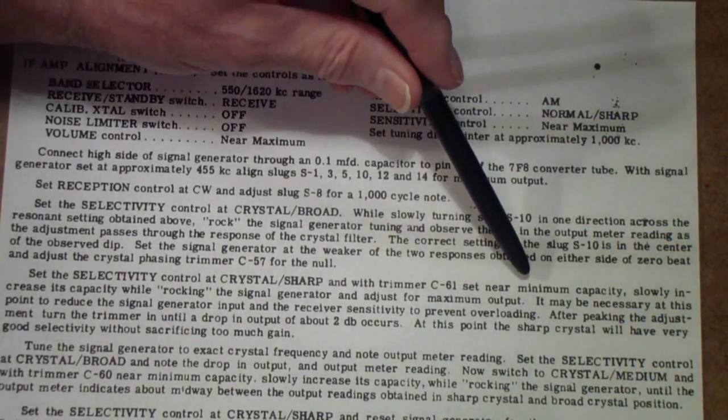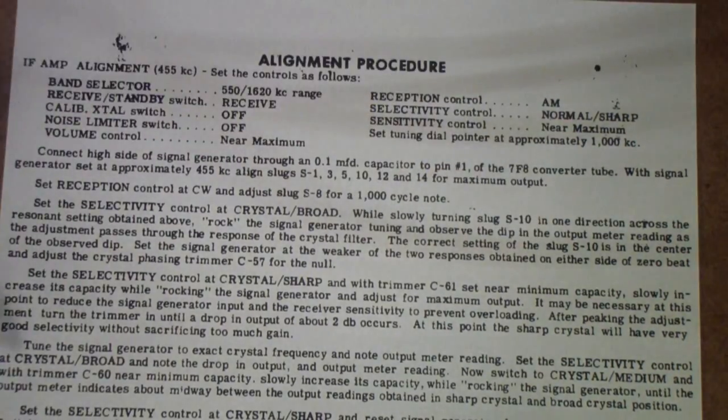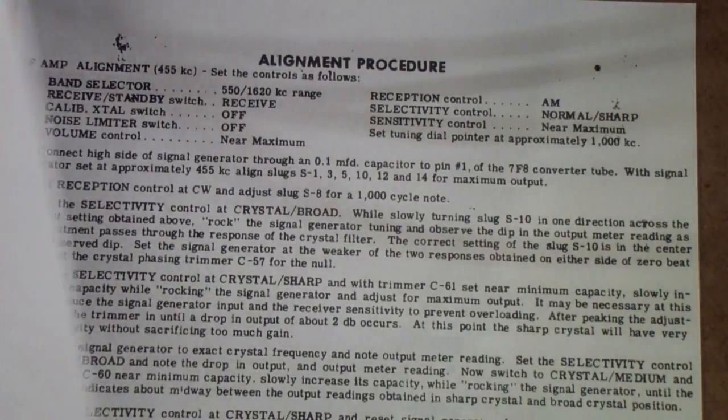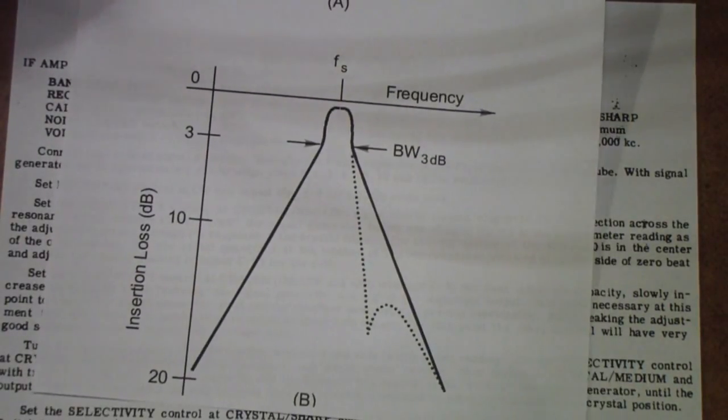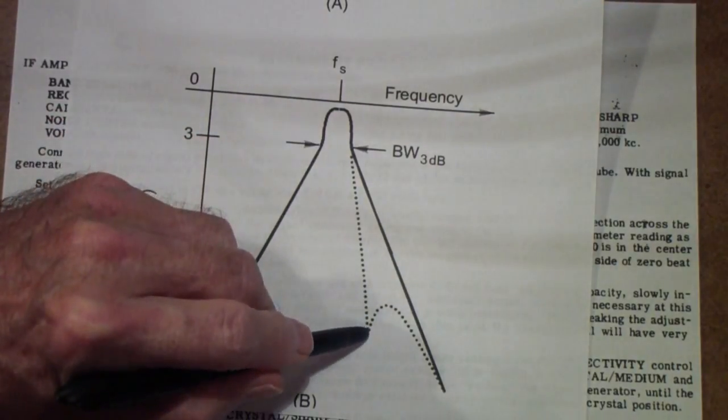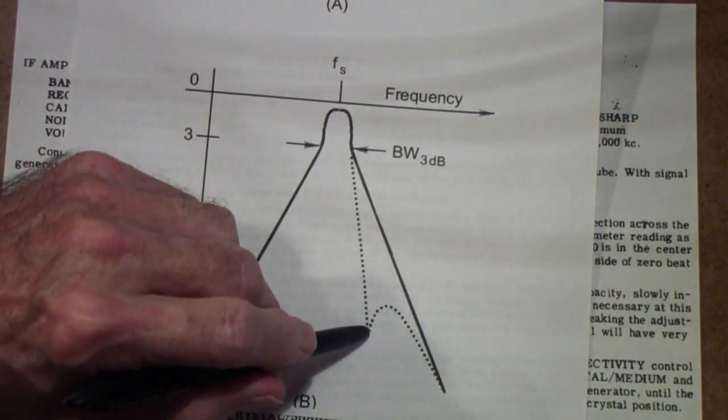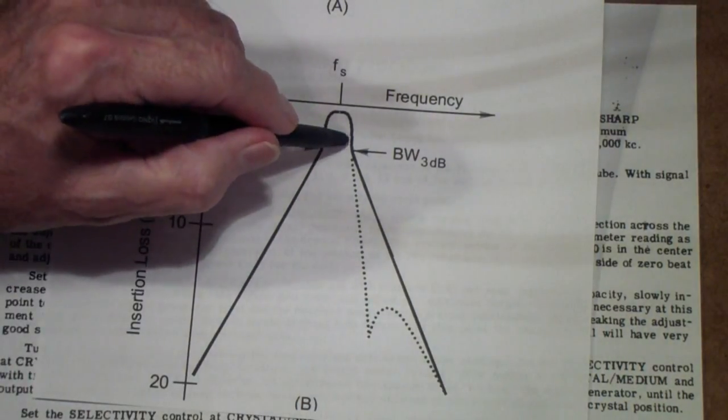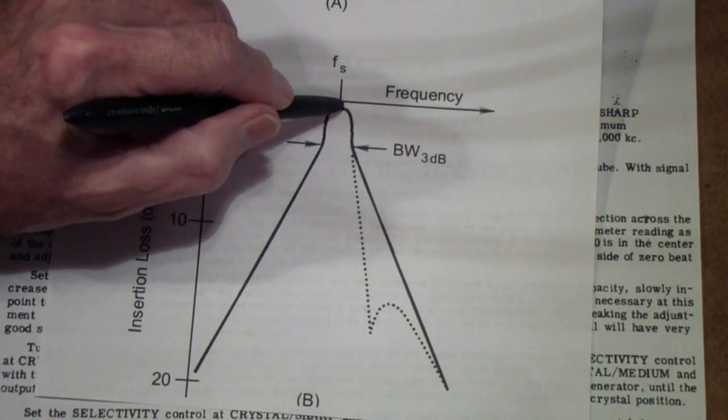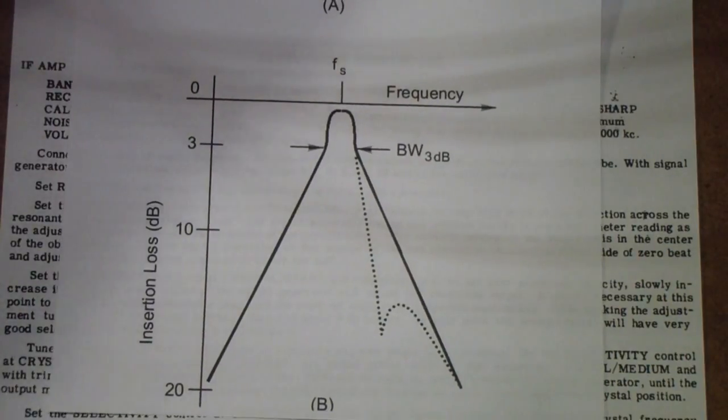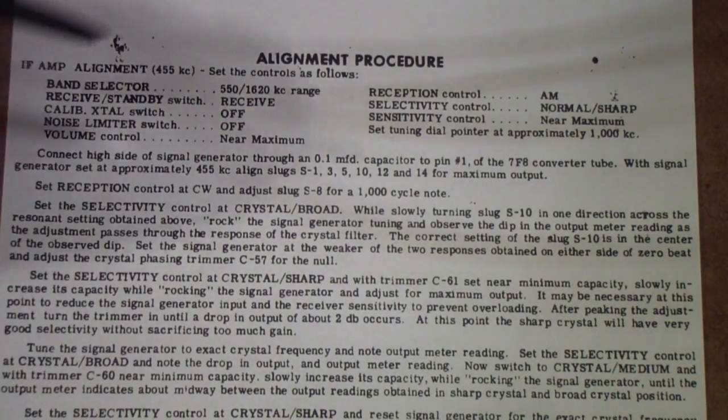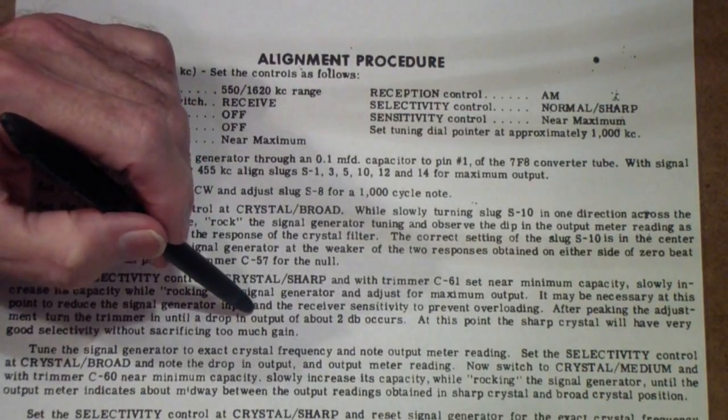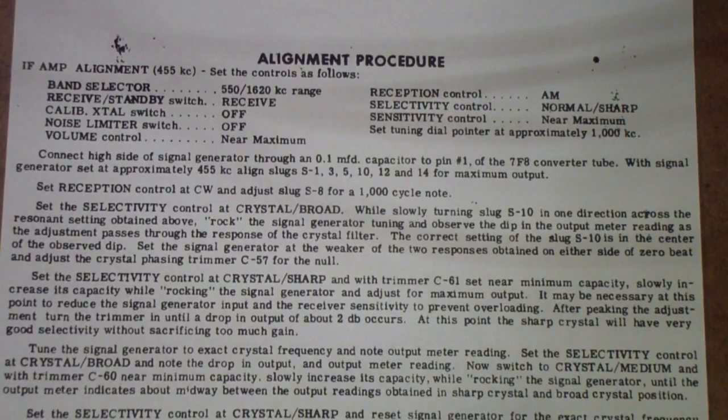and you adjust it to near minimum capacity then once again while rocking the signal generator you continue to increase C61 what you are in effect doing is placing this null at a place that contributes to the selectivity of the filter without cutting the gain too much now I will tell you that in my experience with the SX62 when you turn it from the broad to the sharp position you are going to get some loss of signal